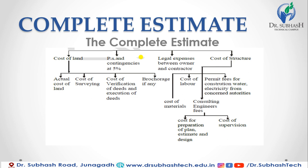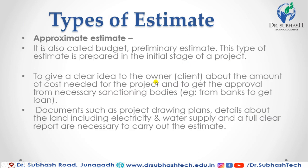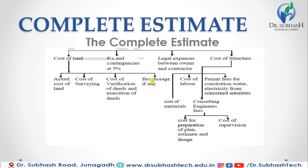Cost of land may be divided into four different types. First is the actual cost of land, second is cost of surveying, third is cost of verification of deeds and execution of deeds, and fourth is brokerage.